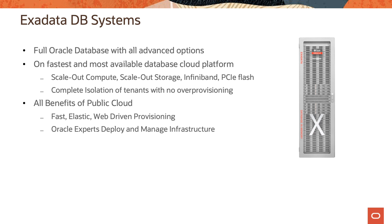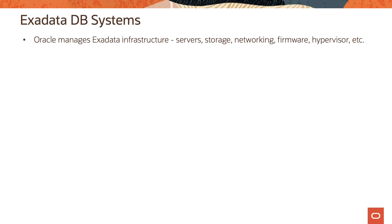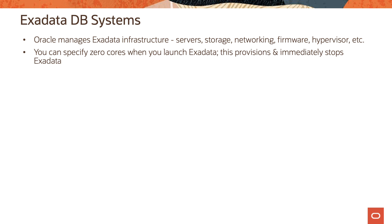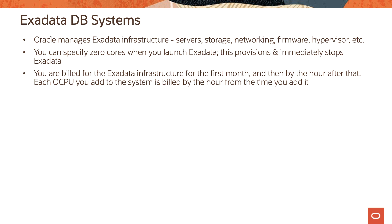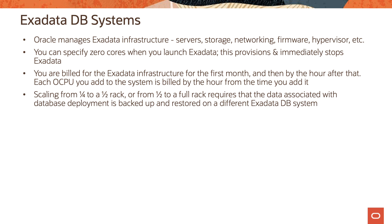Oracle experts deploy and manage the infrastructure. Oracle manages the Exadata infrastructure — namely the servers, storage, networking, firmware, hypervisor, etc. You can specify zero cores when you launch Exadata, which will provision and immediately stop the Exadata service. You are billed for the Exadata infrastructure for the first month and then by the hour after that. Each OCPU you add to the system is billed by the hour from the time you add it. Scaling from a quarter rack to a half rack, or from half to a full rack, requires that the data associated with the database deployment is backed up and restored on a different Exadata DB system. The table below gives a comparison between the different Exadata DB system offerings on Oracle Cloud Infrastructure.